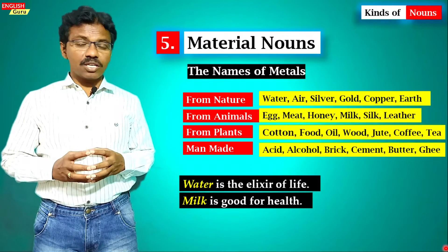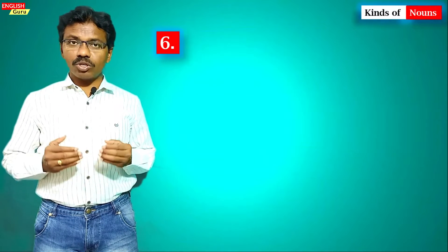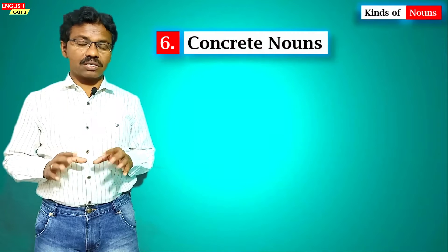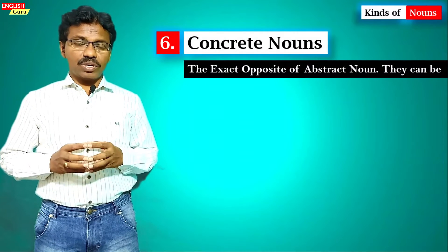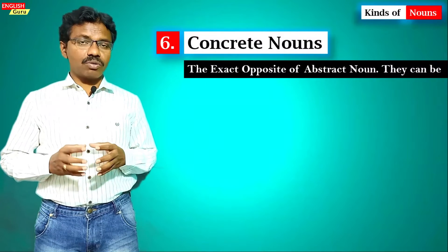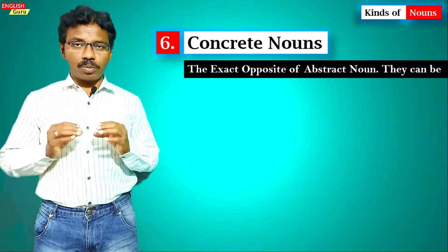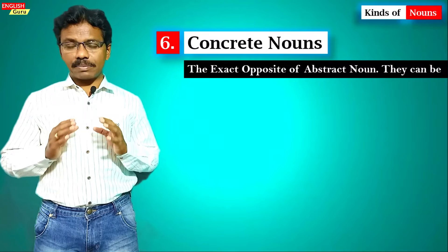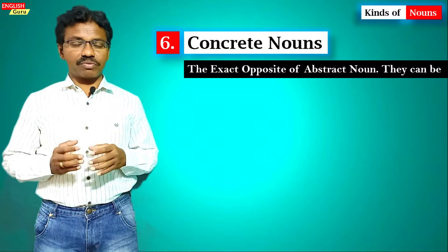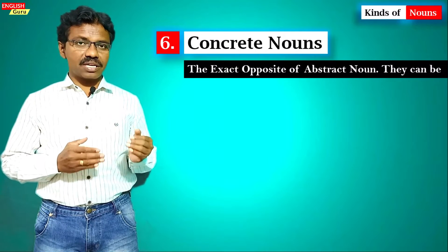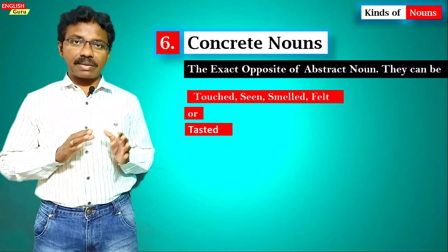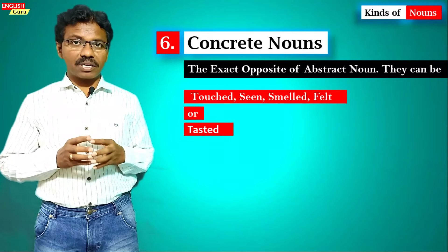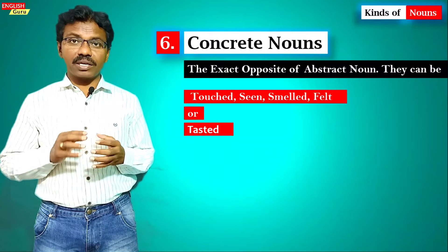'Water is the elixir of life' — 'water' is a material noun. 'Milk is good for health' — 'milk' is a material noun. The sixth kind is concrete nouns, which are the opposite of abstract nouns. We cannot touch abstract nouns, but we can touch, smell, see, or taste concrete nouns.